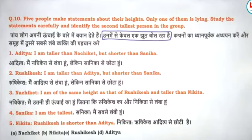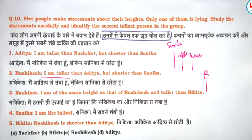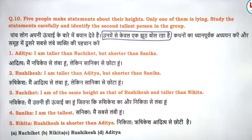Five people make a statement about their heights. Only one of them is lying. We have to identify the second tallest person. Aditya says: I am taller than Natchiket but shorter than Sanika. Rishiket says: I am taller than Aditya but shorter than Sanika, and taller than Natchiket.